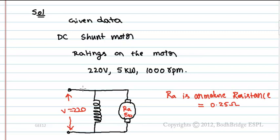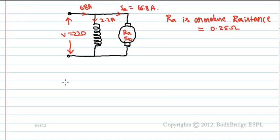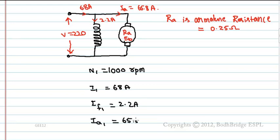Current drawing at rated speed equals 68A and the rated field current is 2.2A. Then the armature current Ia equals 65.8A. Let us denote all rated values with suffix 1. Then N1 equals 1000RPM, I1 equals 68A, IF1 equals 2.2A, Ia1 equals 65.8A.